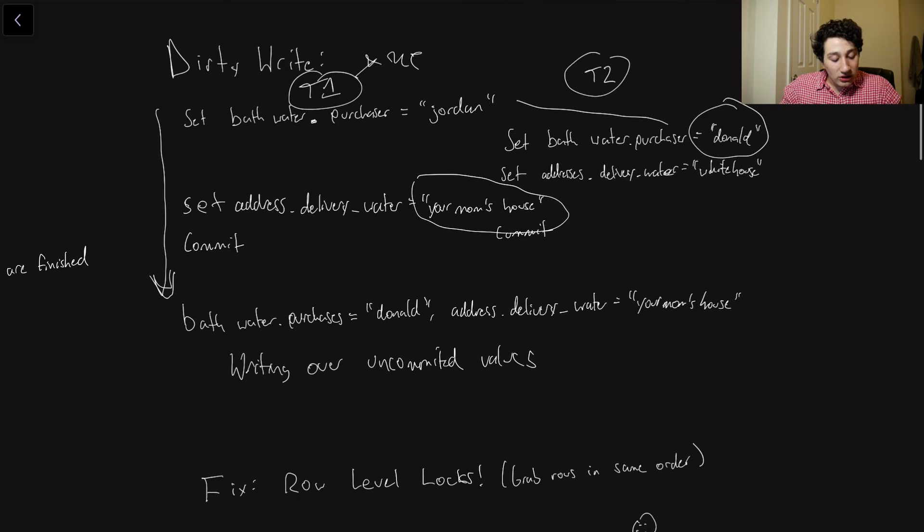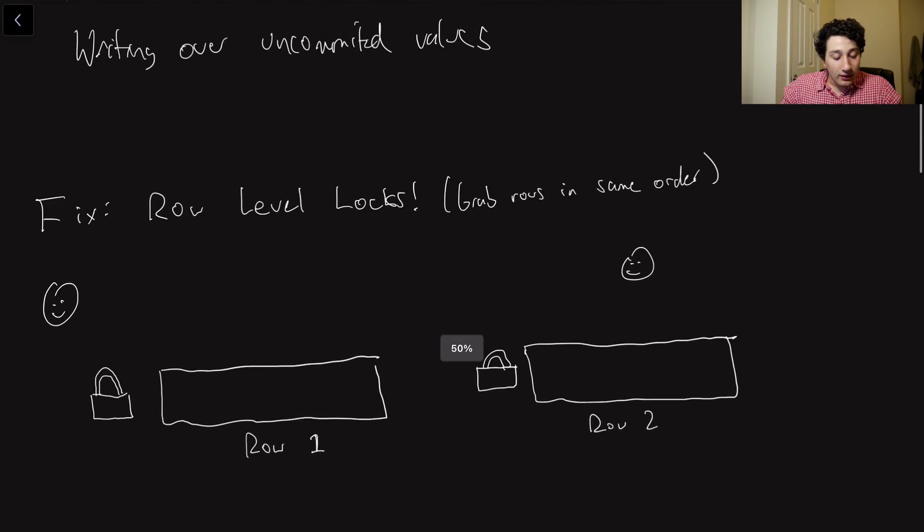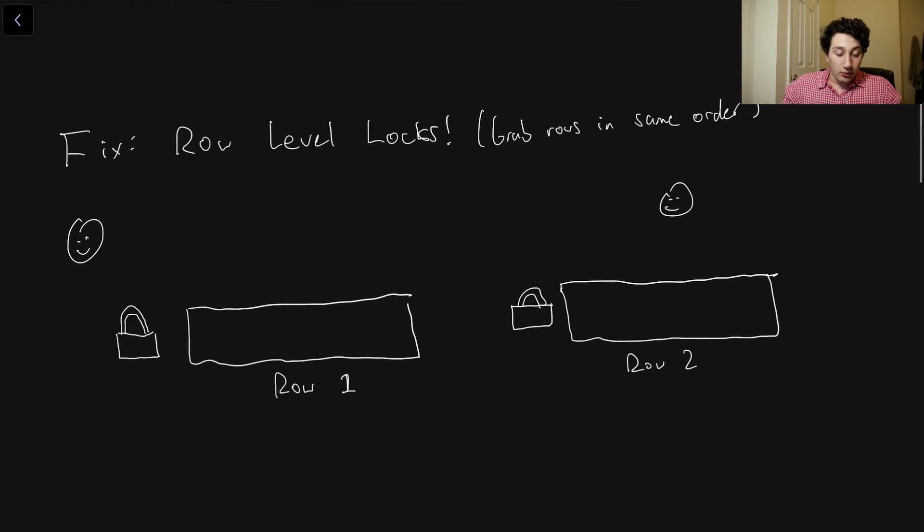So how can we actually go ahead and think about fixing a dirty write? Well, what would work really nicely is something like locking. So if you're not familiar, locking basically just means that if I have the lock on a certain row, no one else can do anything with that row. They have to be able to grab the lock, but they can't until I release it.